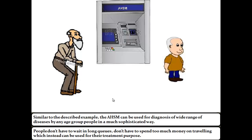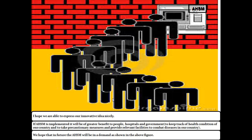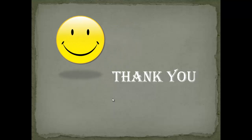Similar to the described example, AHSM can be used for diagnosis of a wide range of diseases by any age group in a much more sophisticated way. People don't have to wait in long queues or spend too much money on travelling, which instead can be used for their treatment. If AHSM is implemented, it will be of greater benefit to people, hospitals, and government to keep track of health conditions across the country and to take precautionary measures and provide relevant facilities to combat diseases. We hope that in future the AHSM will be in high demand, as shown in the above figure. Thank you.